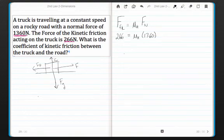At this point, I'm going to divide both sides by 1,360 to get my mu k or mu kinetic to be equal to 0.191. Once again, the coefficient of friction has no units, so I'm going to leave it just like that. All right, we'll see you next time.